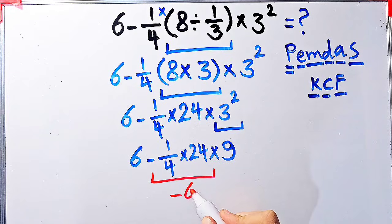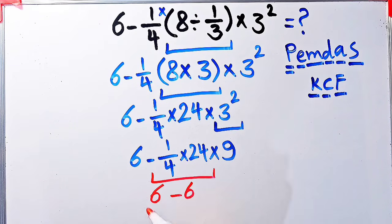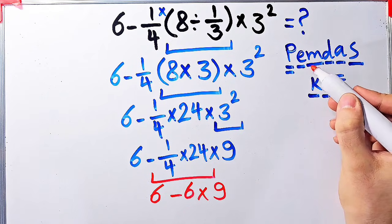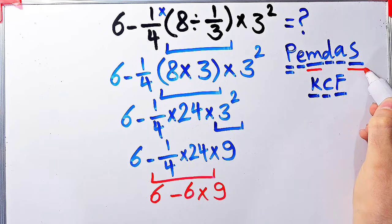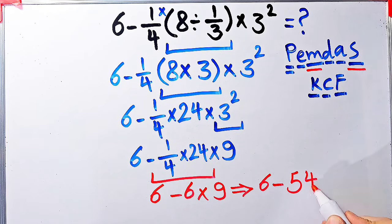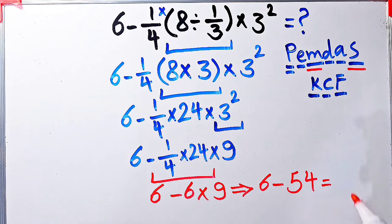Now the question is six minus six, then times nine. We have subtraction and multiplication. First we simplify this multiplication because multiplication has higher priority than subtraction: negative six times nine equals negative fifty-four. Now we have six minus fifty-four. Six minus fifty-four equals negative forty-eight. The final answer of this question equals negative 48.